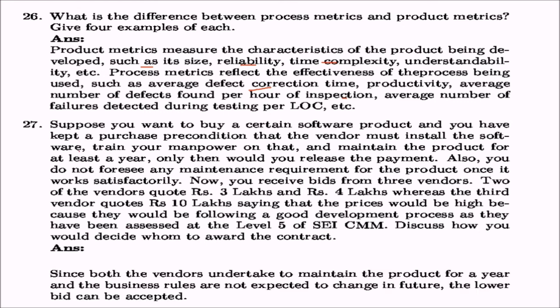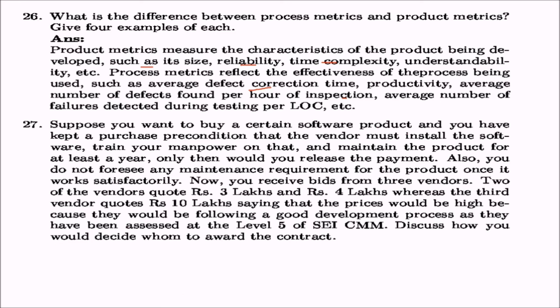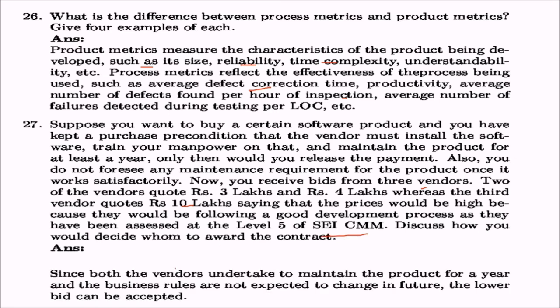Suppose you want to buy a product with the condition that the vendor must install the software, train your manpower, and maintain it for at least a year before payment. You receive bids from three vendors — two quote 3 lakhs and 4 lakhs, and the third quotes a higher price citing their level 5 SEI-CMM assessment. Since both lower-bid vendors undertake to maintain the product for a year and the business rules are not expected to change, the lower bid can be accepted.